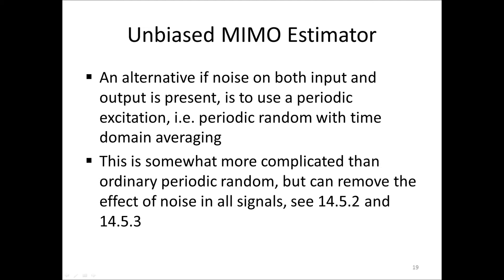Finally, I would just mention the possibility to estimate MIMO FRFs also without bias in the case where the input and output signals are contaminated by noise. This can be achieved by using periodic random and using time domain averaging instead of the frequency domain averaging proposed earlier in this video. This way it's possible to remove the noise in both vectors X and Y. This does require longer averaging though, but it's described in the book in sections 14.5.2 and 14.5.3. So if you're interested in this possibility, look in the book.